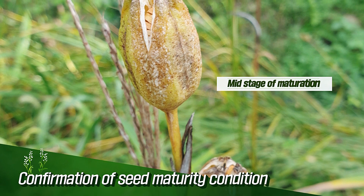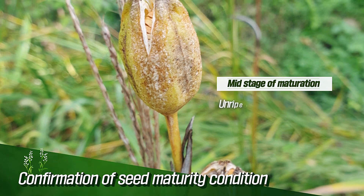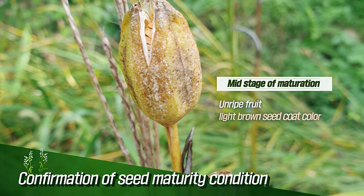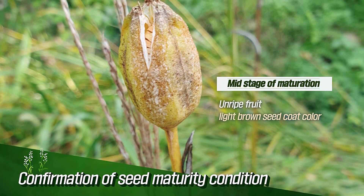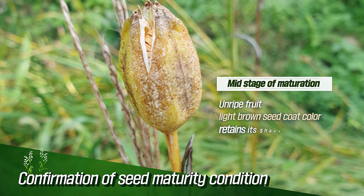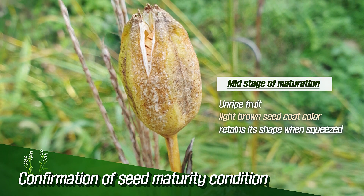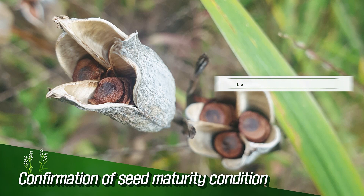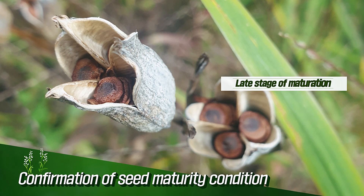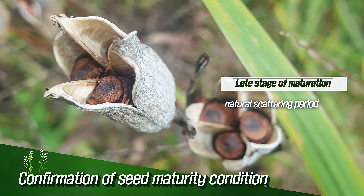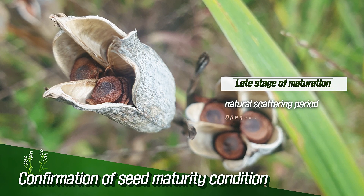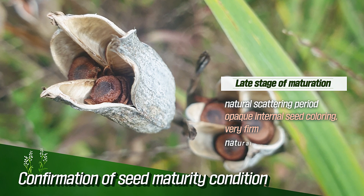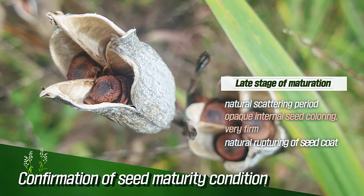In the mid-maturity stage, the fruit is still unripe, the seed coat color is light brown, and it retains its shape when squeezed. The late maturation period is the natural dispersion period and is characterized by the spontaneous rupture of the seed coat.